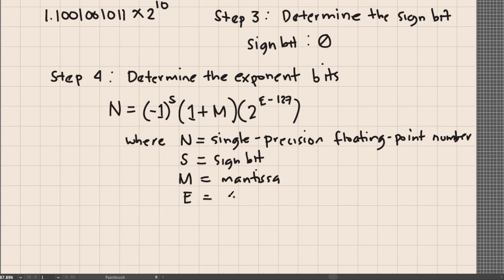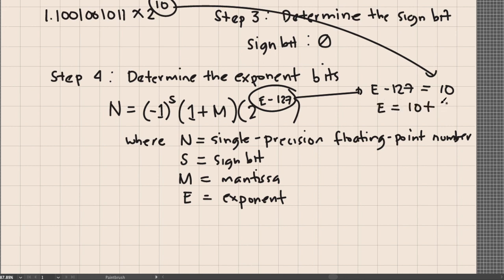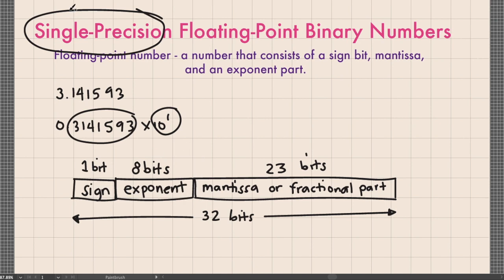Going back to Step 4, since we have an exponent of 10 from our scientific notation, we solve for E using E – 127 = 10, giving E = 137. This is in decimal form, so we must convert it to binary to fill the 8-bit exponent field. We perform repeated division on 137.